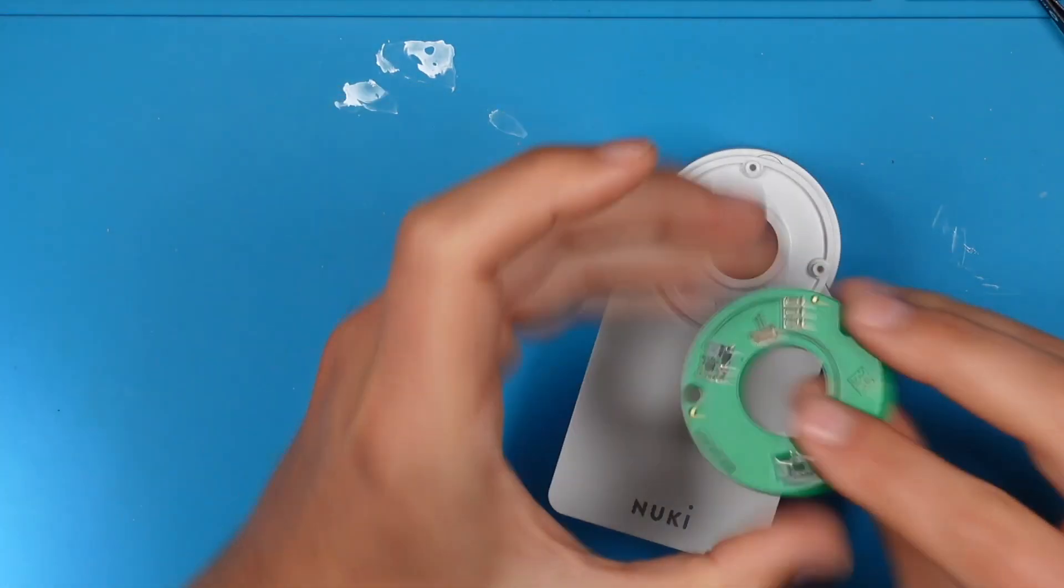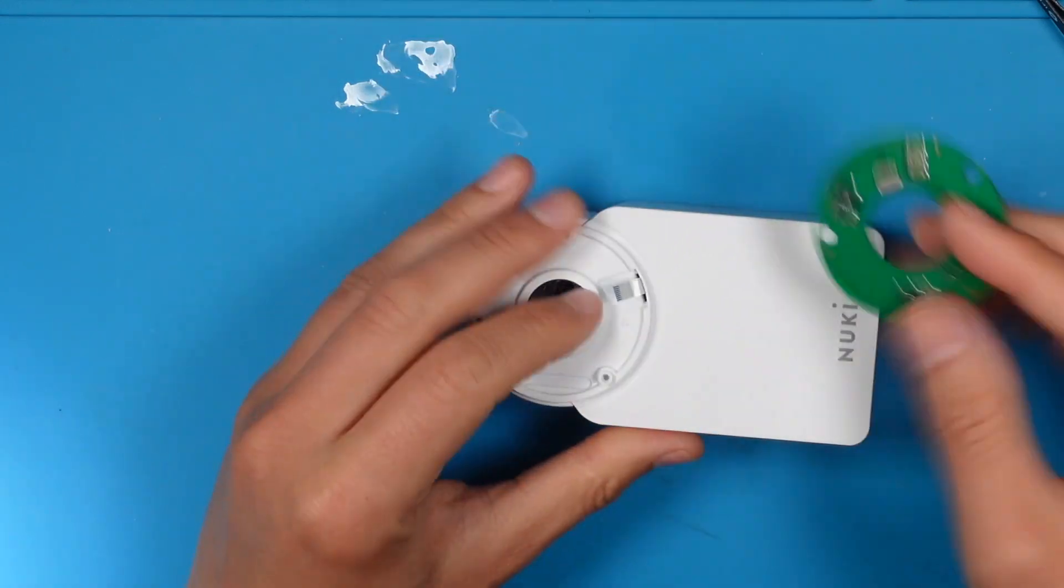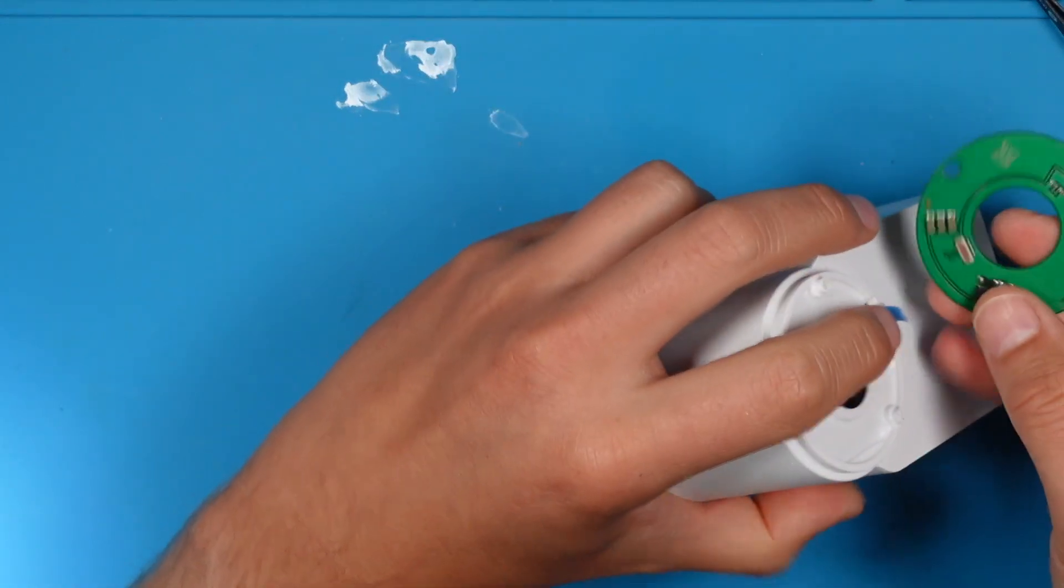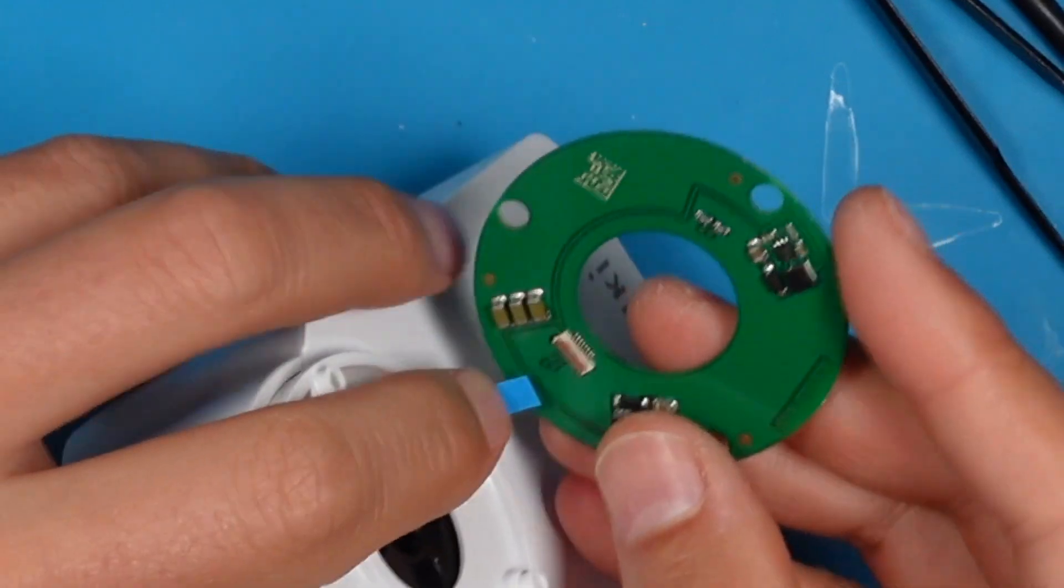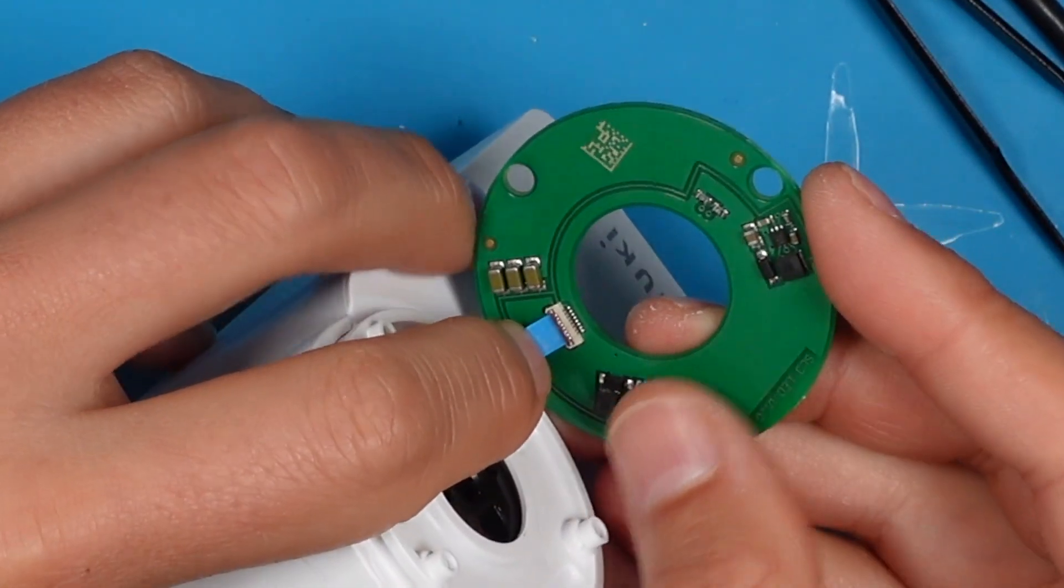The next step is the daughterboard. The ribbon cable needs to be reconnected. Insert it slowly.